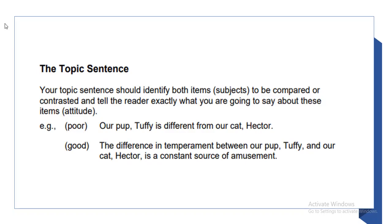Always remember about the topic sentence. In any sort of writing, especially when writing a paragraph, your topic sentence should identify both items or both subjects to be compared or contrasted, and tell the reader exactly what you are going to say about these items. For example, a poor/weak example is: 'Our puppy Toffee is different from our cat Hector.' A better example is: 'The difference in temperament between our pup Toffee and our cat Hector is a constant source of amusement.'